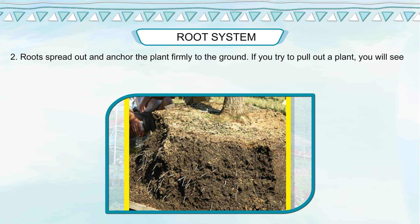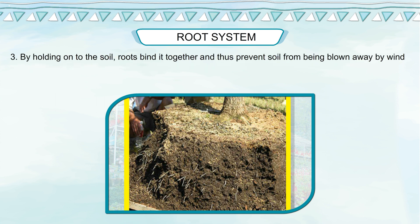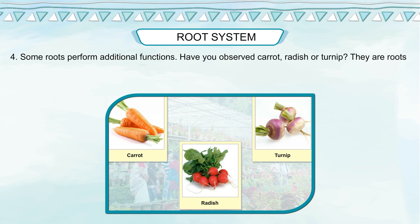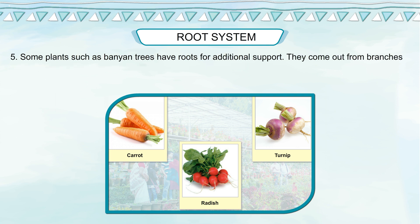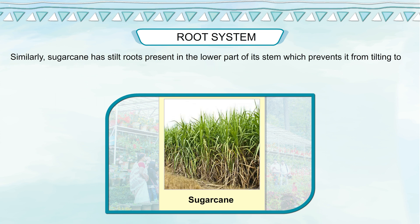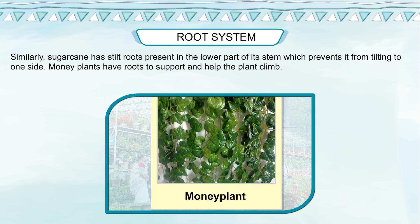If you try to pull out a plant, you will see it is difficult and needs force. Roots provide support to the plant to stand erect and grow. By holding on to the soil, roots bind it together and thus prevent soil from being blown away by wind or water. Some roots perform additional functions. Carrot, radish and turnip are roots which store food — they are called modified roots. Some plants such as banyan trees have prop roots that come out from branches and grow towards the soil. Sugarcane has stilt roots in the lower part of its stem which prevent it from tilting to one side.